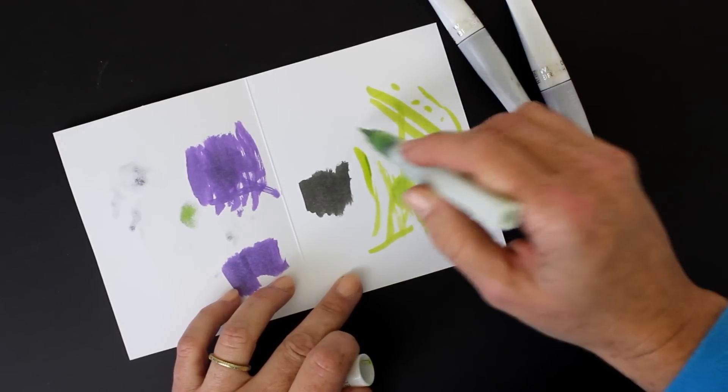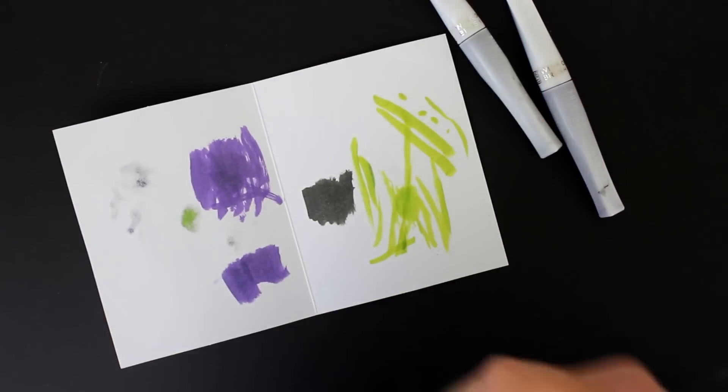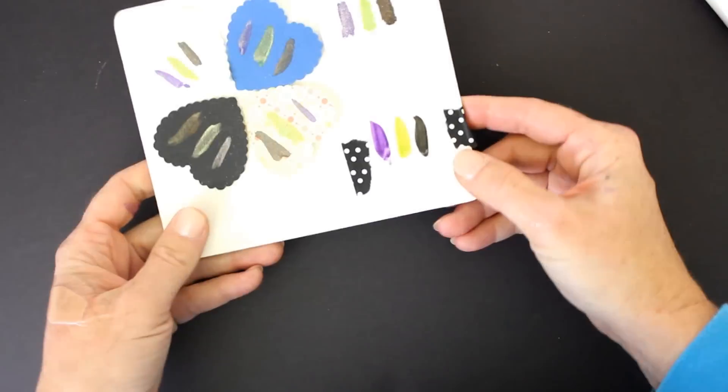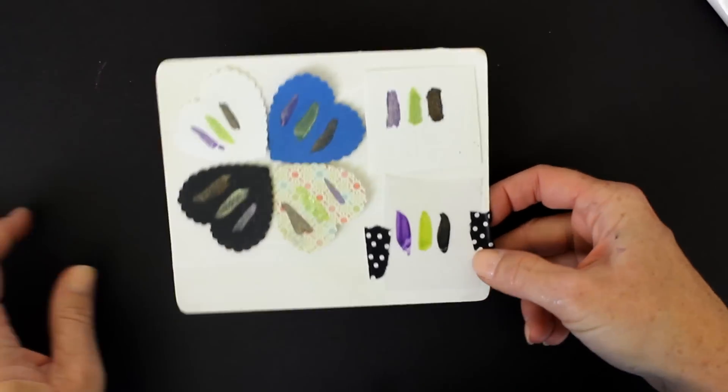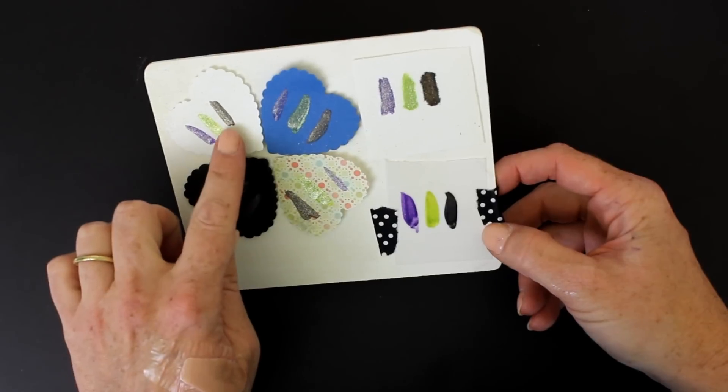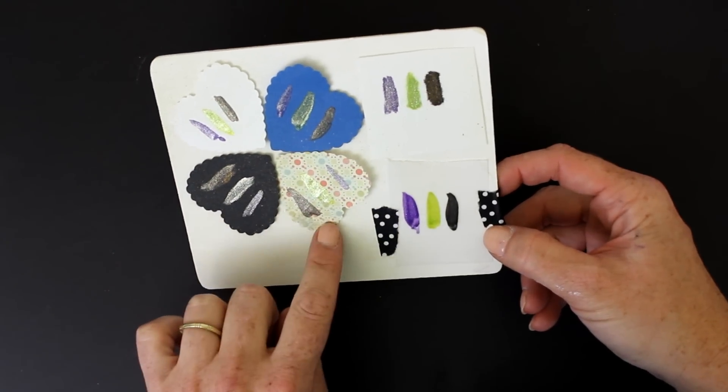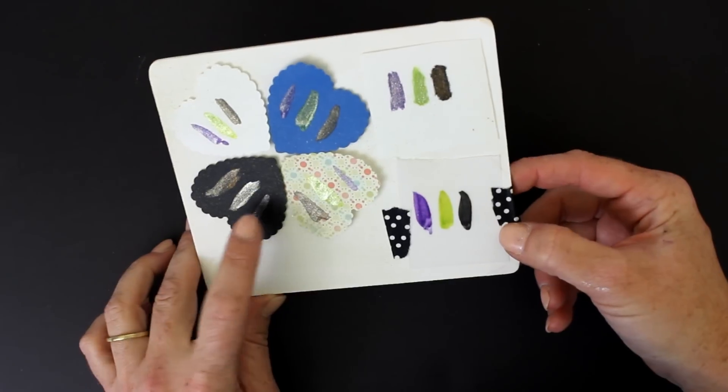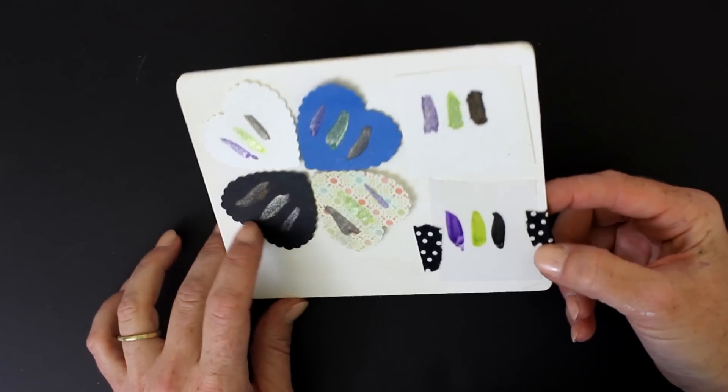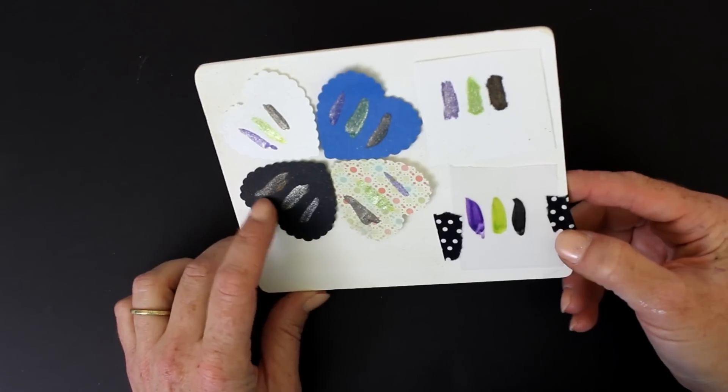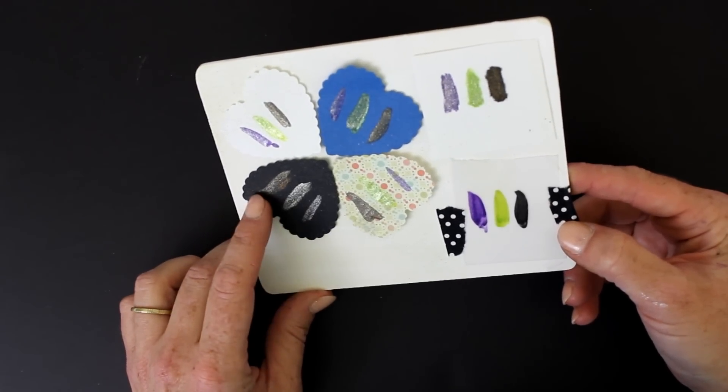I tried them out first of all on some different surfaces. Here's my swatch. What you'll see is that I used it on white, blue, black, and patterned paper. Even though it's black paper, notice interestingly it has an interference color to it.